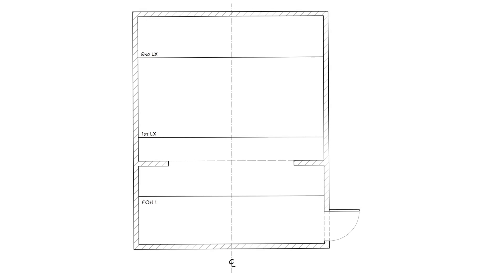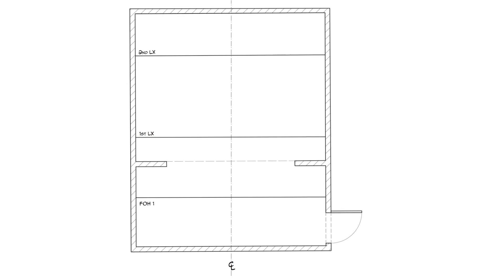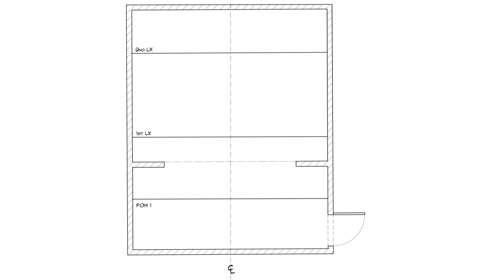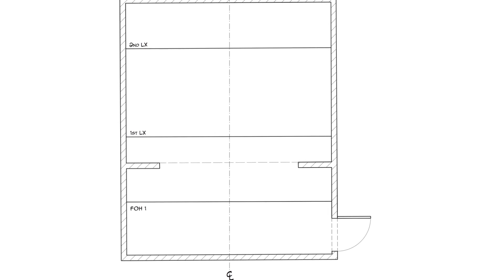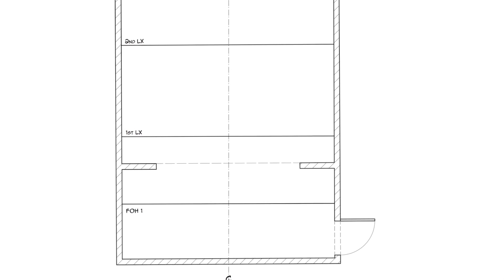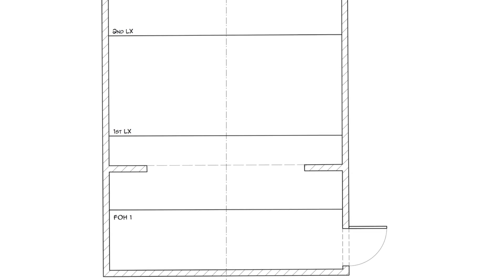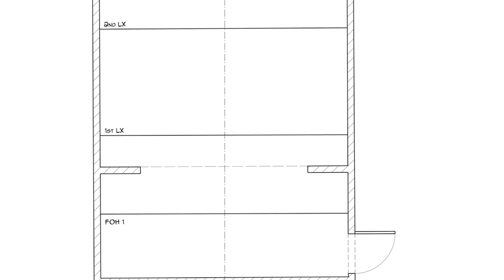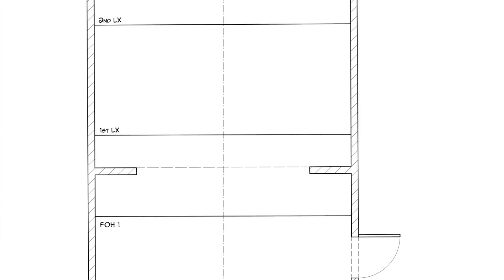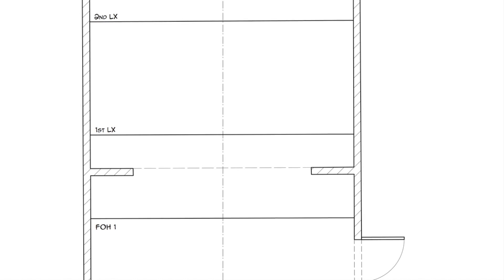All light plots include a depiction of lighting positions. Those above the stage are referred to as electrics, whereas those in the house have specific names depending on their position. For example, this light plot includes three hanging positions: first electric, second electric, and front of house one. Notice that the numbering system for lighting positions begins at the proscenium and works outward.